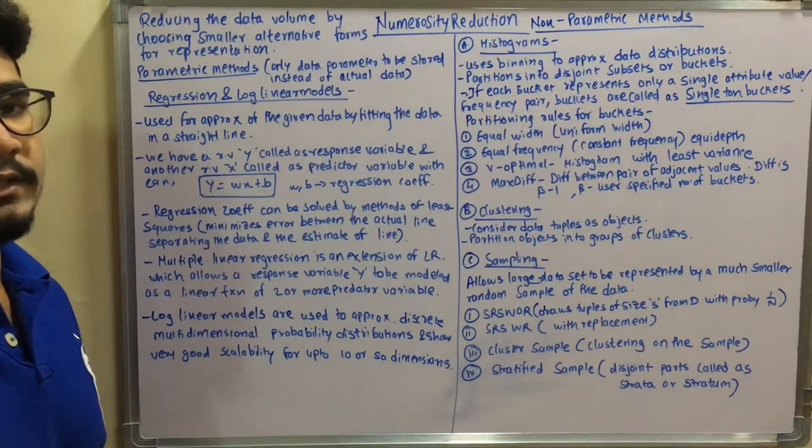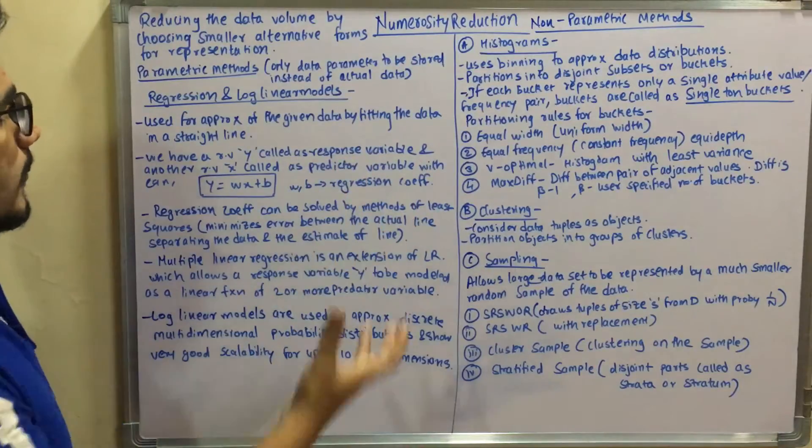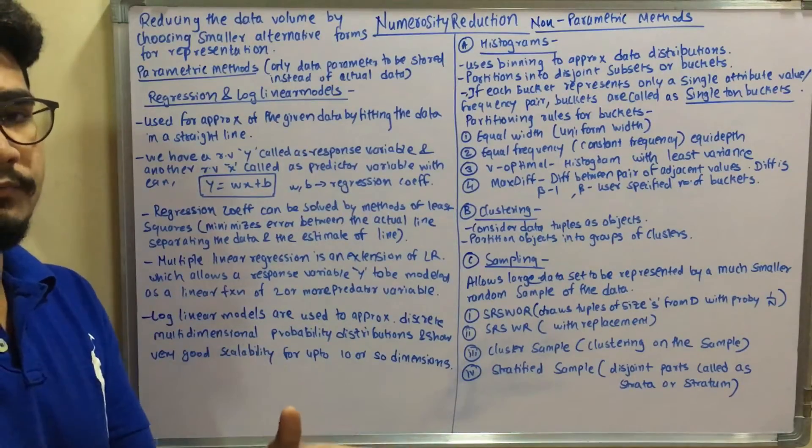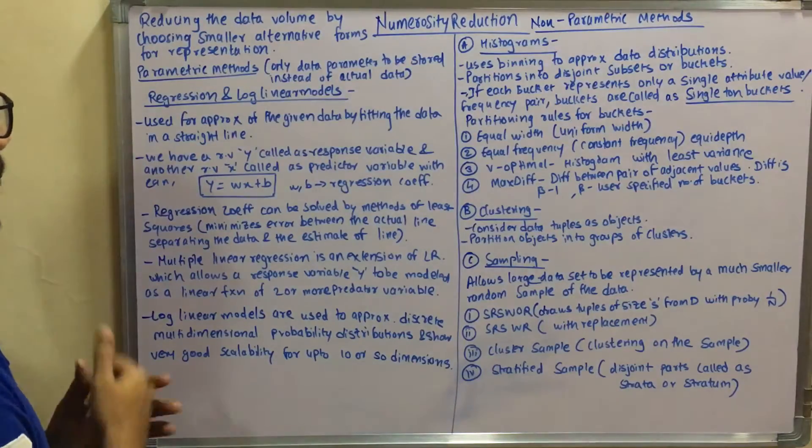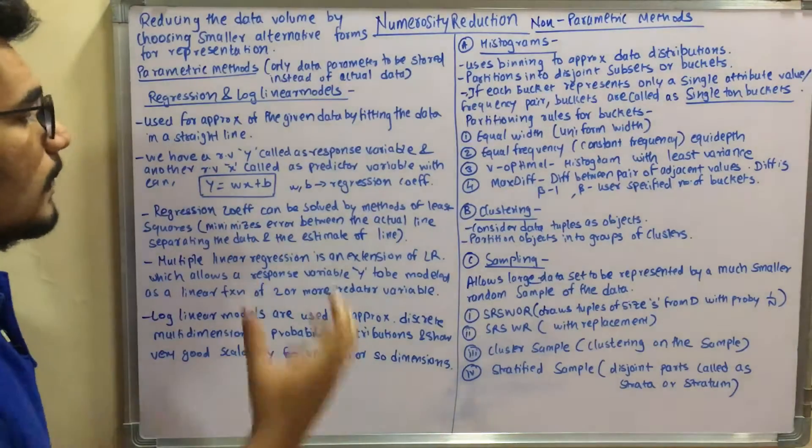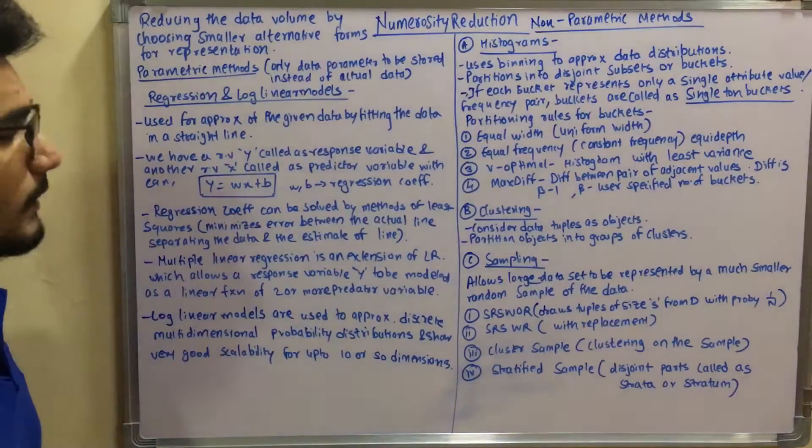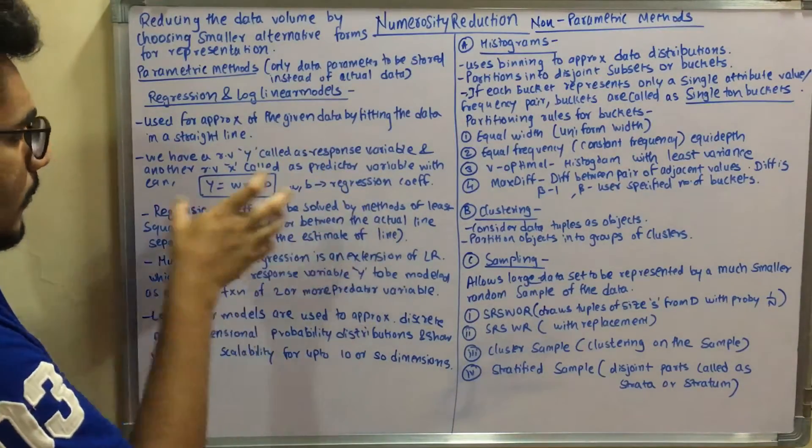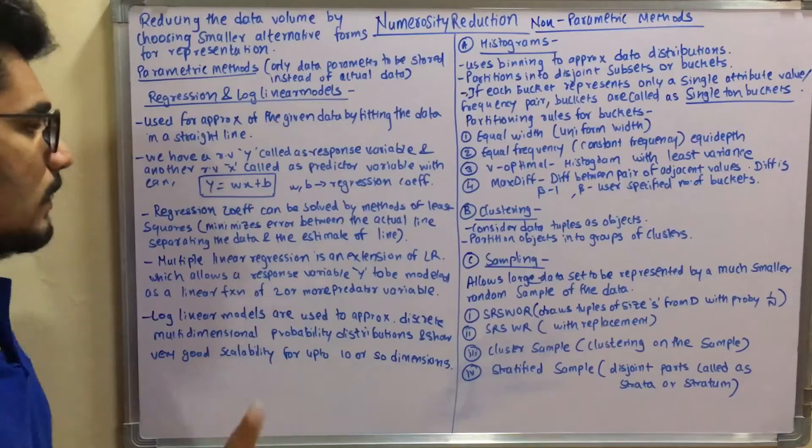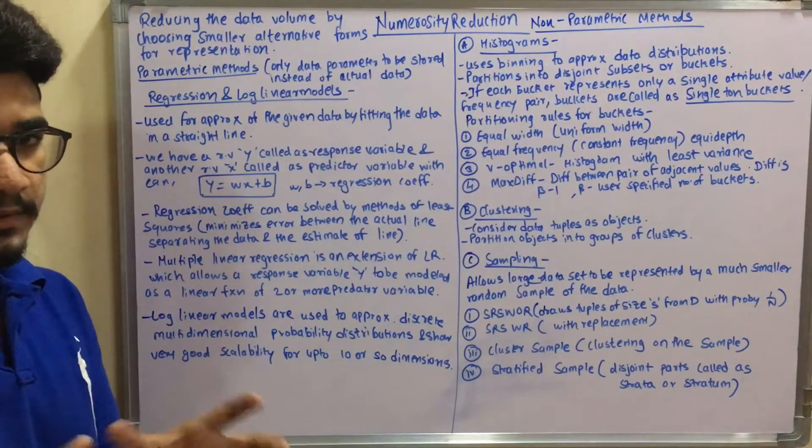So you have two kinds of techniques in this which go hand in hand: regression and log linear models. So in regression, you have two kinds—linear regression and multiple linear regression. It is used for approximation of the given data by fitting the data in a straight line. Like you calculate one particular line equation and then you fit your parameters and plot some kind of slope. So like we have a random variable Y, which is called the response variable, and another random variable X, which is called the predictor variable.